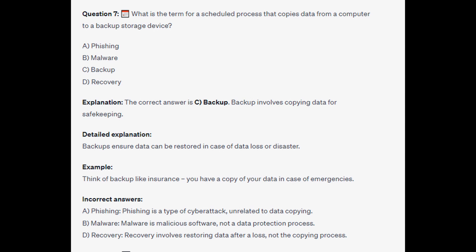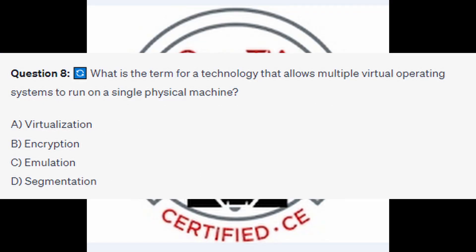Question number eight: What is the term for a technology that allows multiple virtual operating systems to run on a single physical machine? Is it A) Virtualization, B) Encryption, C) Emulation, or D) Segmentation? You now have five seconds.